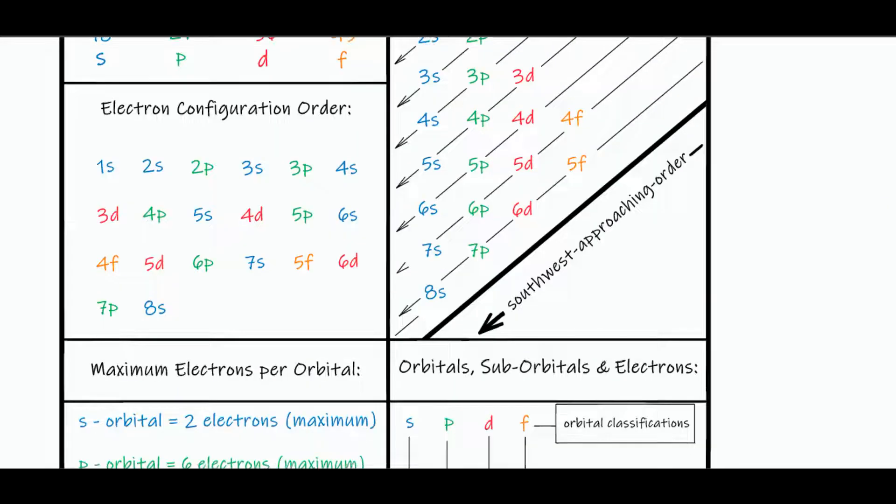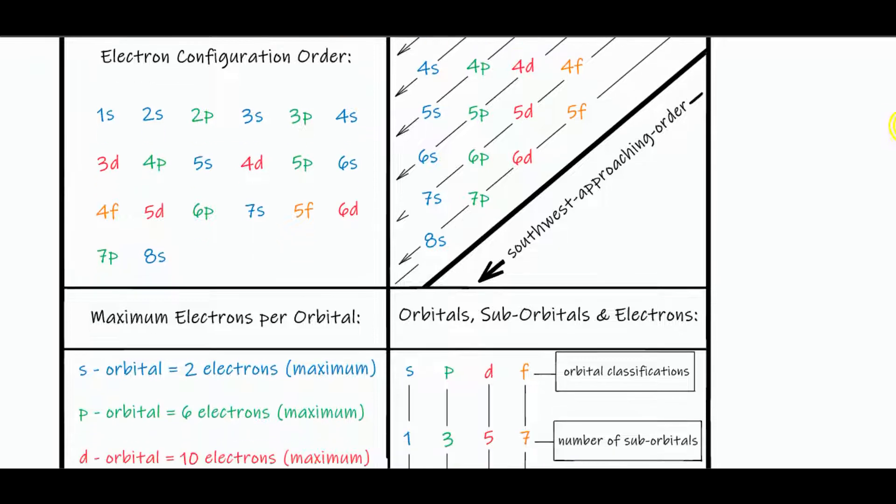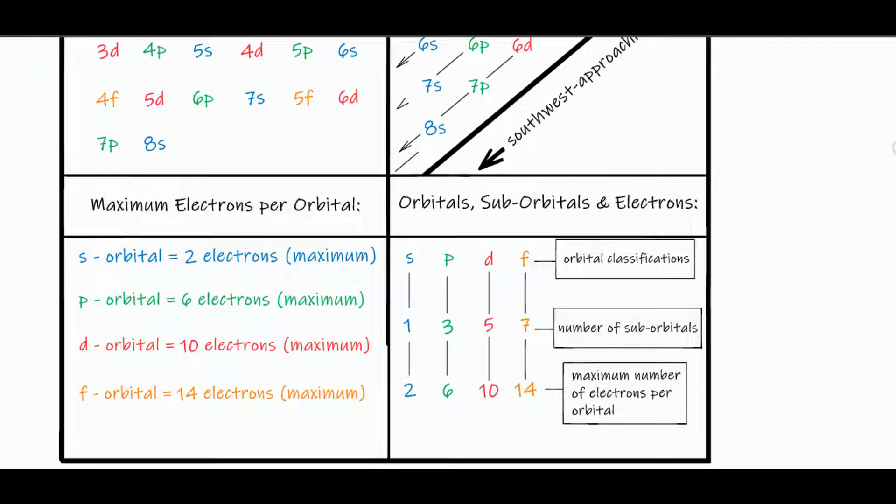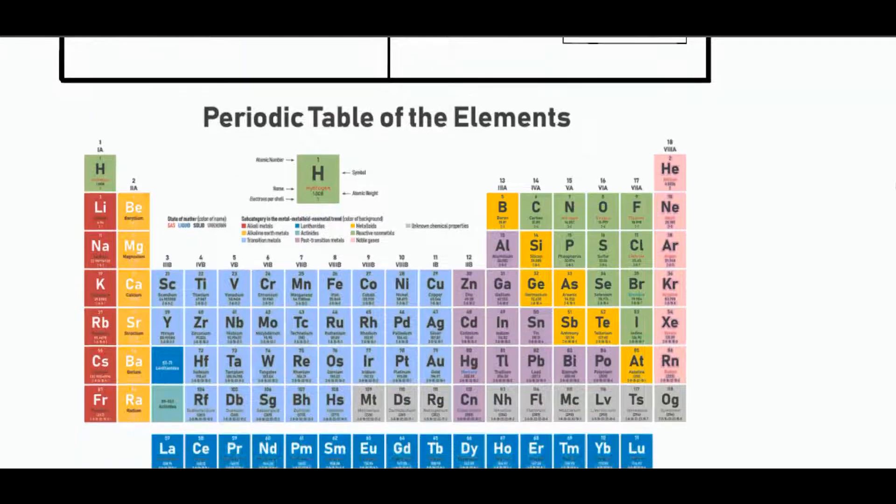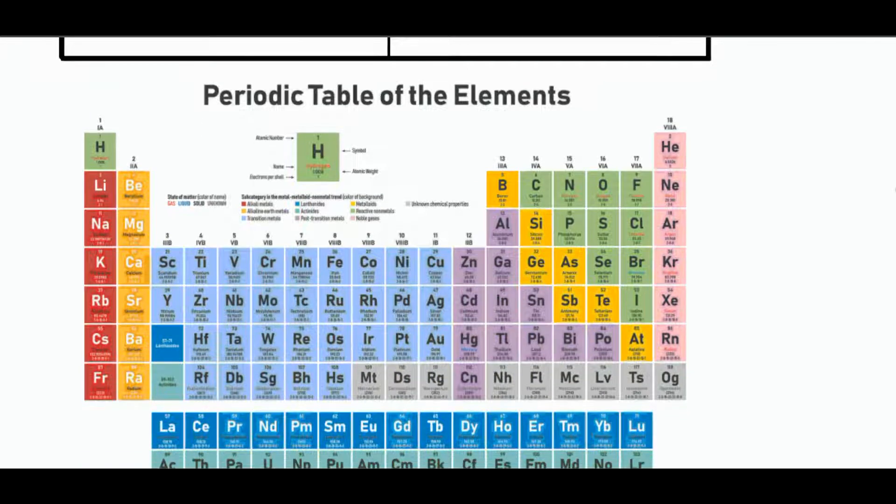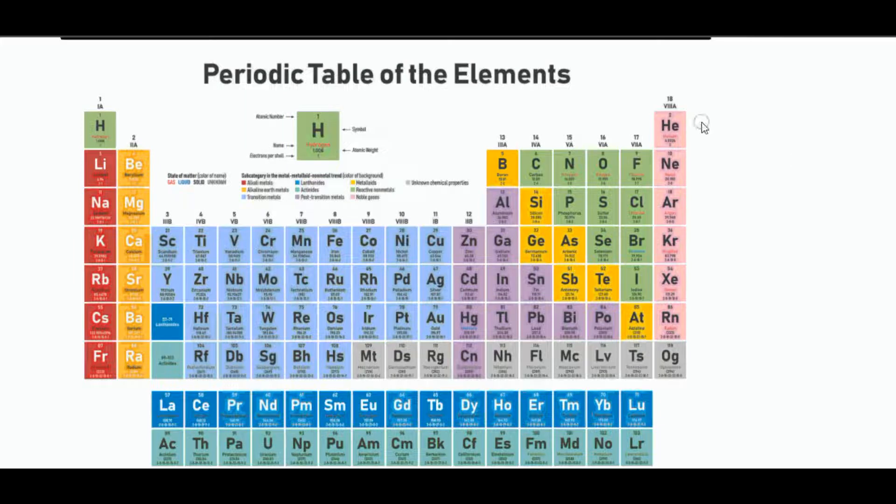So now you're in total control. You've quickly populated the electron configuration order. And you do know with absolute certainty the number of maximum electrons per orbital. So you can do that first. And then on an exam or homework, you are allowed to use the periodic table element. So we have the atomic numbers determining the number of electrons per element.